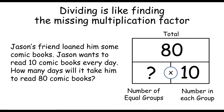So this is division too — it's just the reverse piece of information in the multiplication problem that we're missing; the other factor is missing. So we can think multiplication again. We can think, well, what would I have to multiply 10 by to get 80? I bet you've decided that it's going to take Jason 8 days to read all of those 80 comic books. Nicely done.